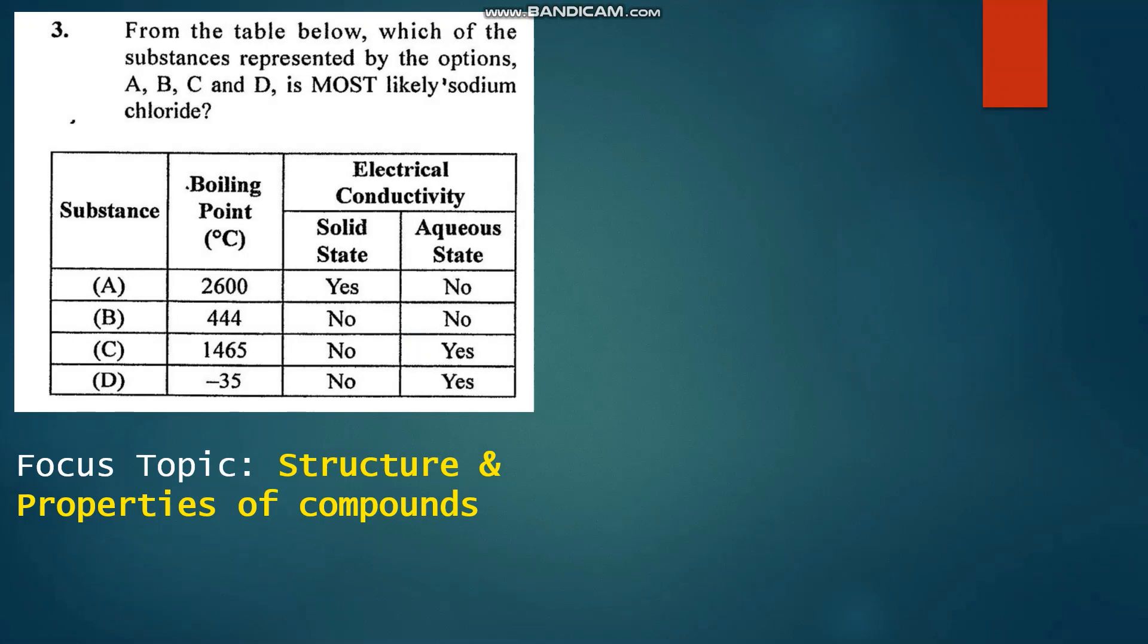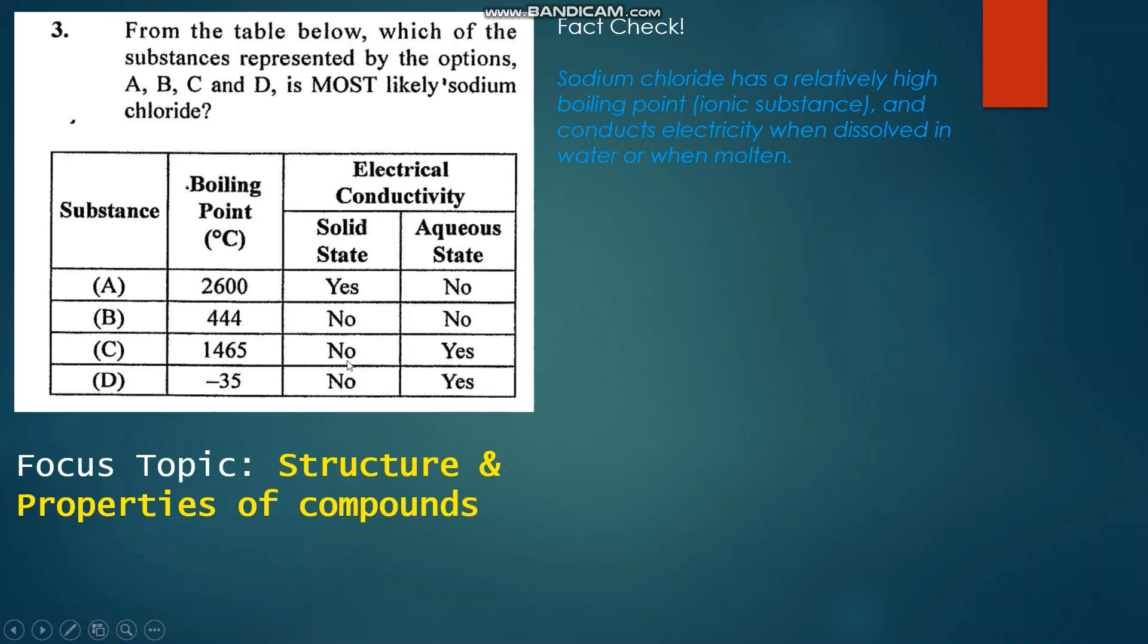Number three: From the table below, which of the substances represented by the options A, B, C, and D is most likely sodium chloride? Sodium chloride has a relatively high boiling point because it is an ionic substance, and it conducts electricity when dissolved in water or when molten. It does not conduct electricity in the solid state. Therefore, C shows a relatively high boiling point, no electrical conductivity in a solid state, and yes for conductivity in the aqueous state. So C is our answer.